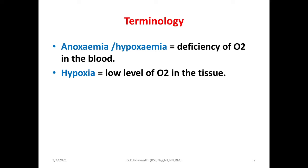First of all, I would like to discuss some important terminology. You should know what is hypoxemia, or anoxemia, as well as what is hypoxia. Hypoxemia means the deficiency of oxygen in the blood, while hypoxia refers to a low level of oxygen in the tissue.